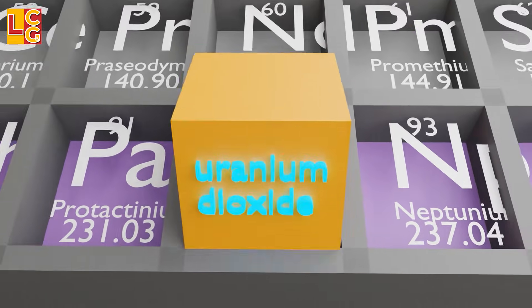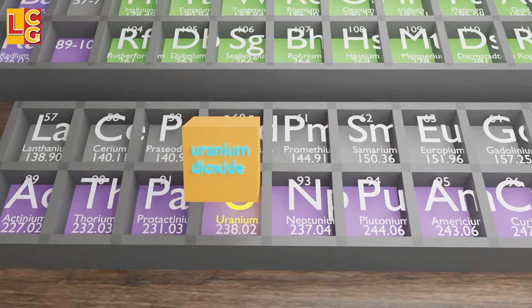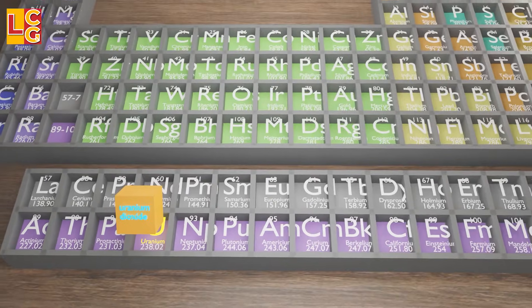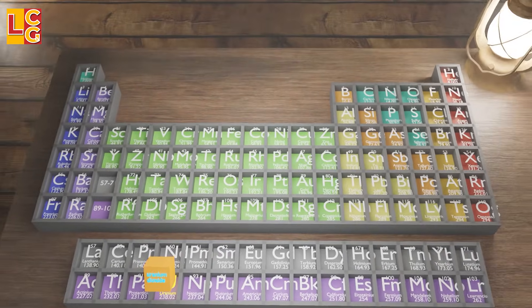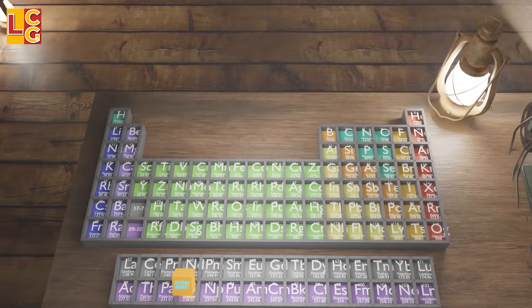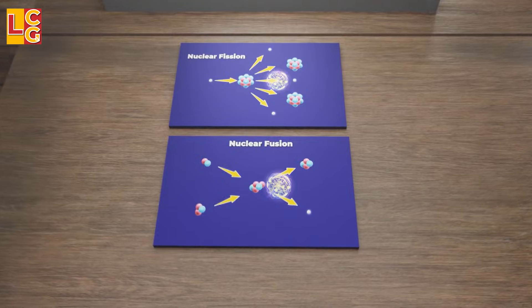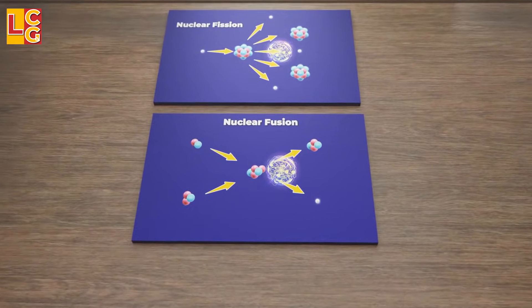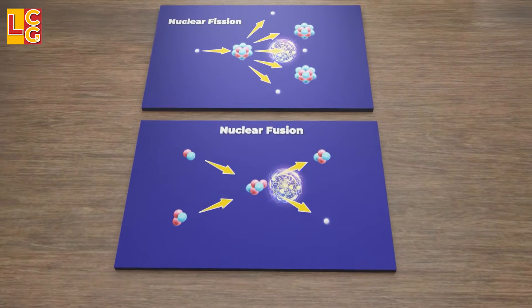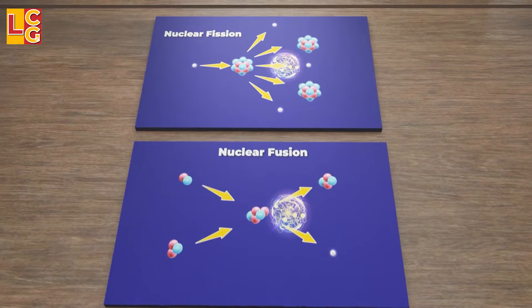Uranium dioxide is one of the fuels which can be used to produce heat in order for the nuclear power plant to generate electricity. The heat can be produced by nuclear fission or nuclear fusion, but most pressurized water reactors apply nuclear fission.